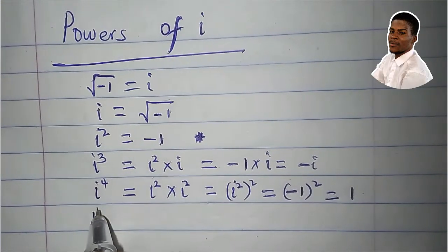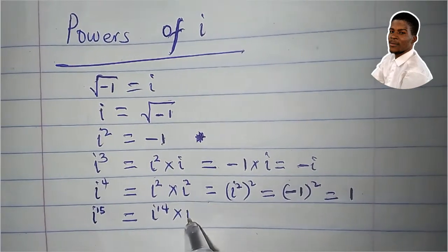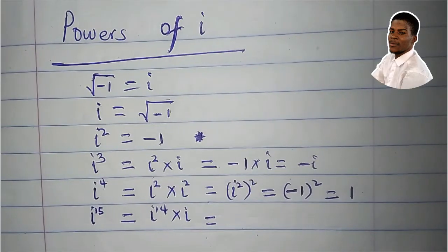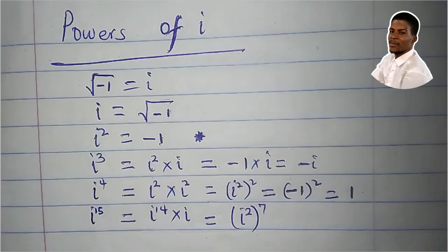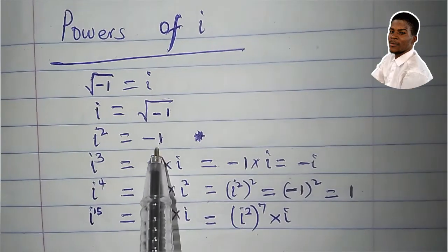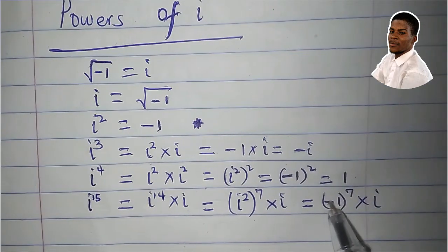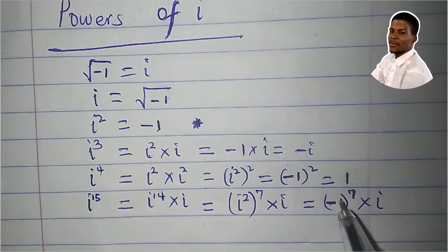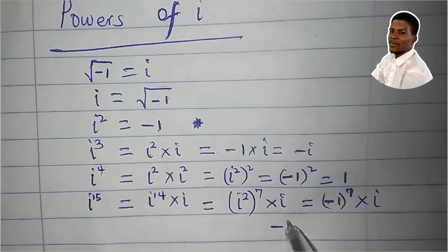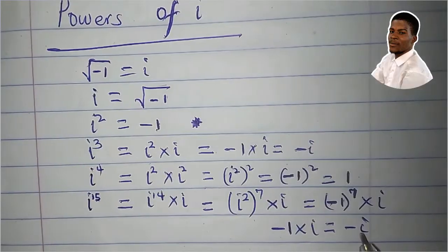Now let's take higher powers. What would be i to the power of 15? I can write i to the power of 15 as i to the power of 14 times i to the power of 1. i to the power of 14 can be written as i squared all to the seventh — i squared raised to the power of 7 — times i. Since i squared is minus 1, we have minus 1 to the power of 7 times i. Raising a negative number to an odd power retains the negative sign, so minus 1 to the power of 7 is minus 1, times i, which equals minus i. So i to the power of 15 equals minus i.